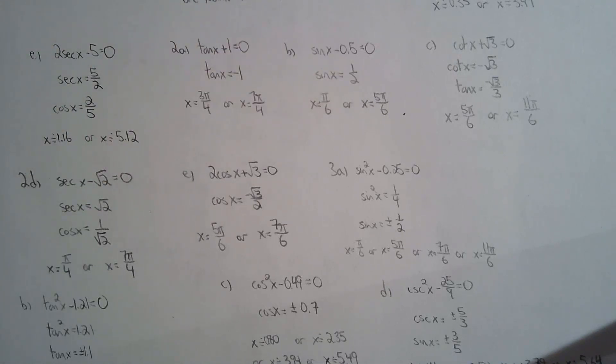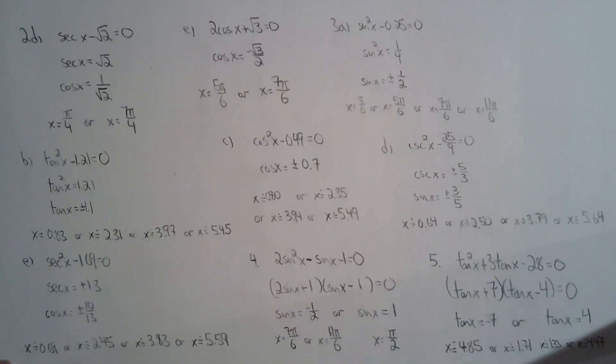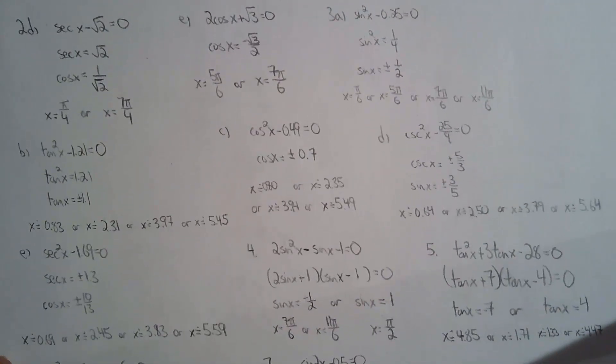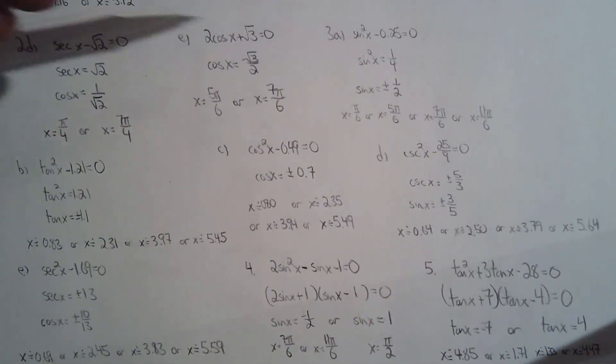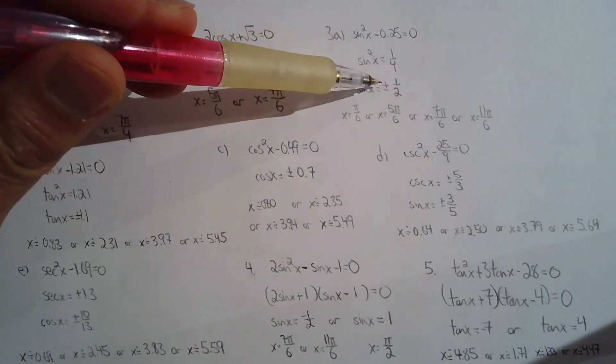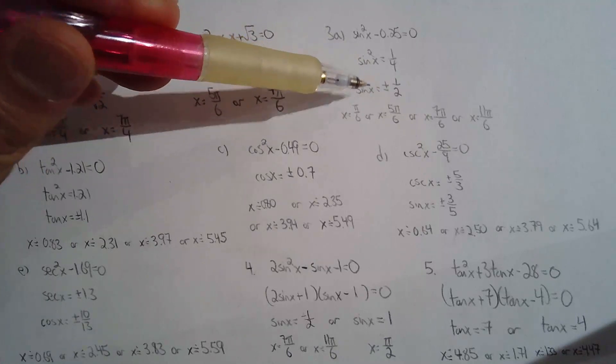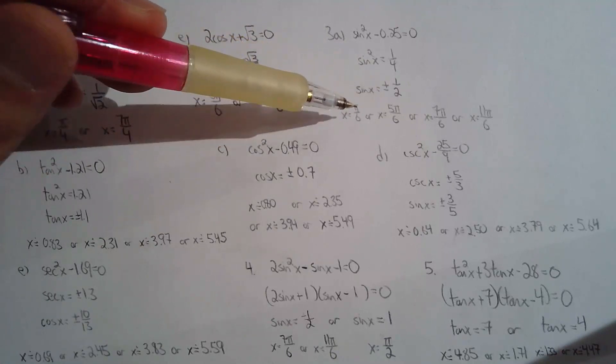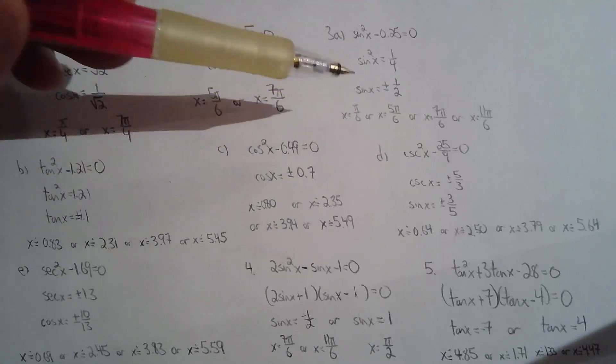Number 3 is basically the same as 1 and 2, except you have to be careful when you square root both sides—it's plus or minus. So instead of just two solutions, you're going to get four solutions because you're going to get an answer in quadrants one, two, three, as well as four.